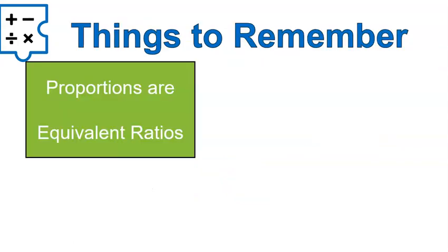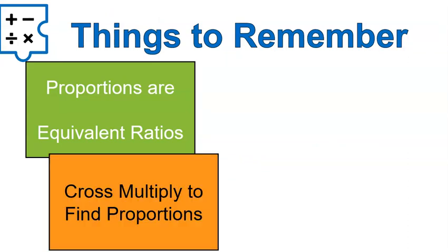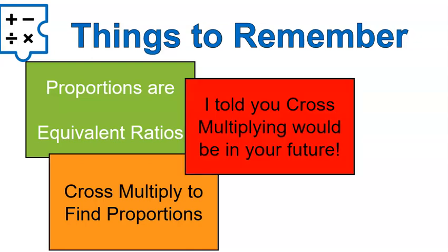A couple things to remember. Proportions are equivalent ratios. They're the same as equivalent fractions. You've done this before. Cross-multiplying will find if they are proportional every single time. And just as a reminder, because I'm one of those people who likes to rub it in when I was right, I told you cross-multiplying would be used in your future. I hope that video was fun for you. Good luck with your cross-multiplying. Make sure to check out that worksheet. Finish all the questions before you go on to the quiz. Have a wonderful day.